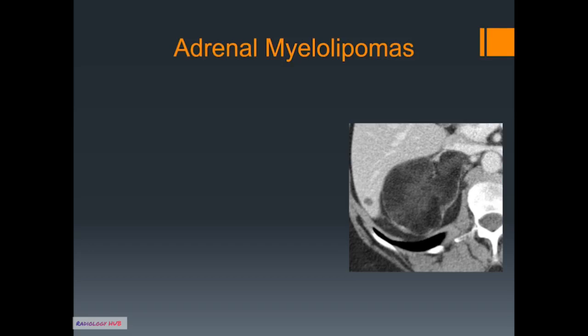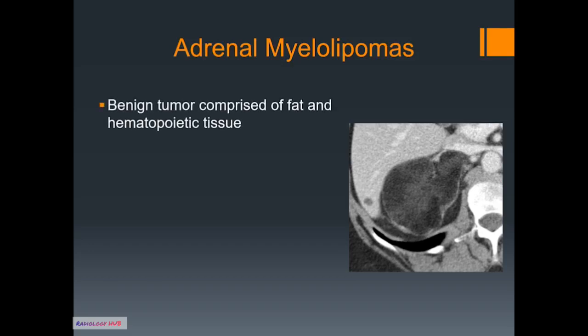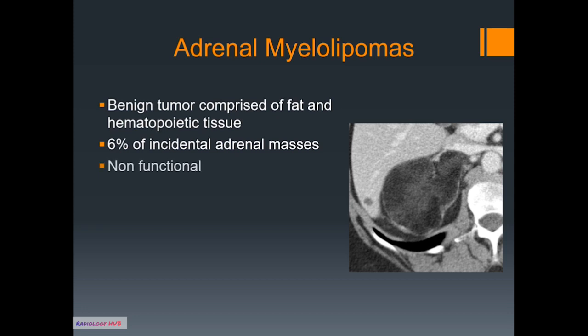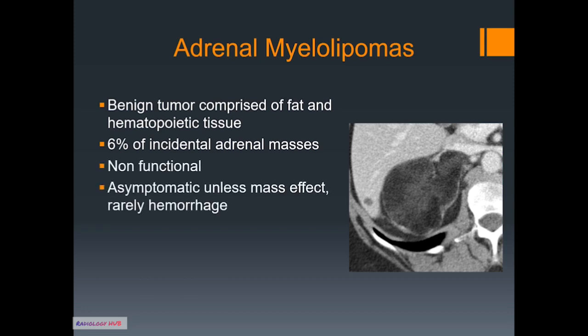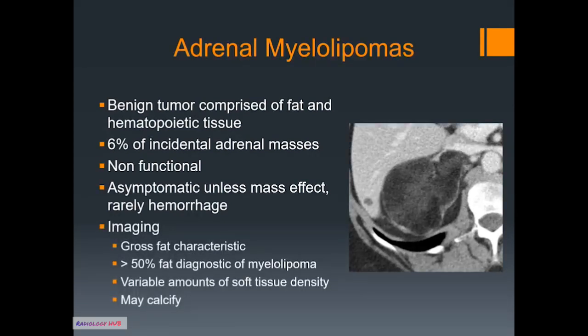Moving on to adrenal myelolipomas — these are benign tumors comprised of fat and hematopoietic tissue. They comprise 6% of incidental adrenal masses. They are non-functional and generally asymptomatic unless they're large enough to have mass effect, and rarely they can hemorrhage. Gross fat is the characteristic imaging feature, and any adrenal mass that is largely comprised of fat, or greater than 50% fat, is essentially diagnostic of a myelolipoma.